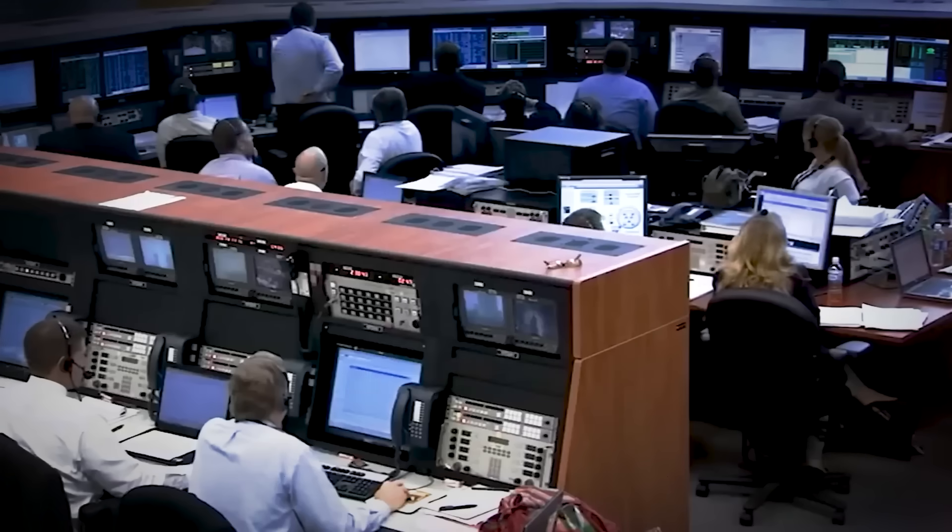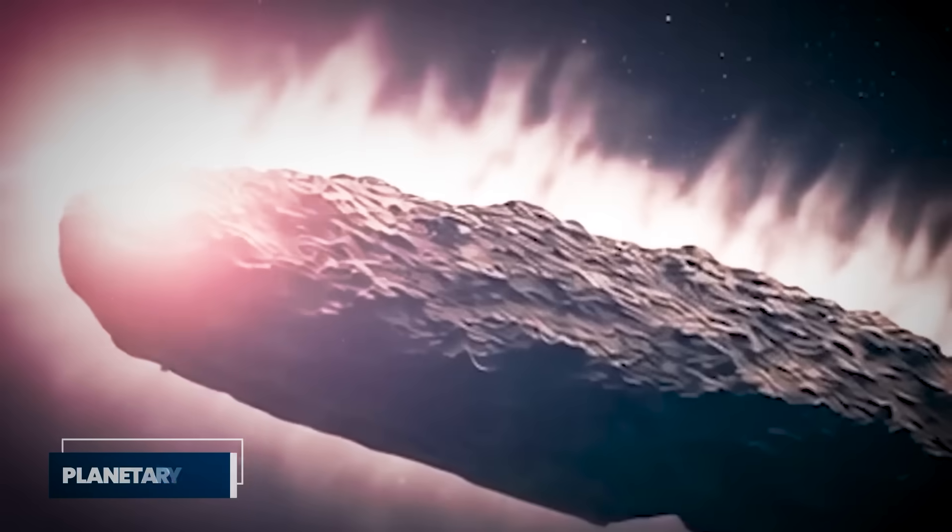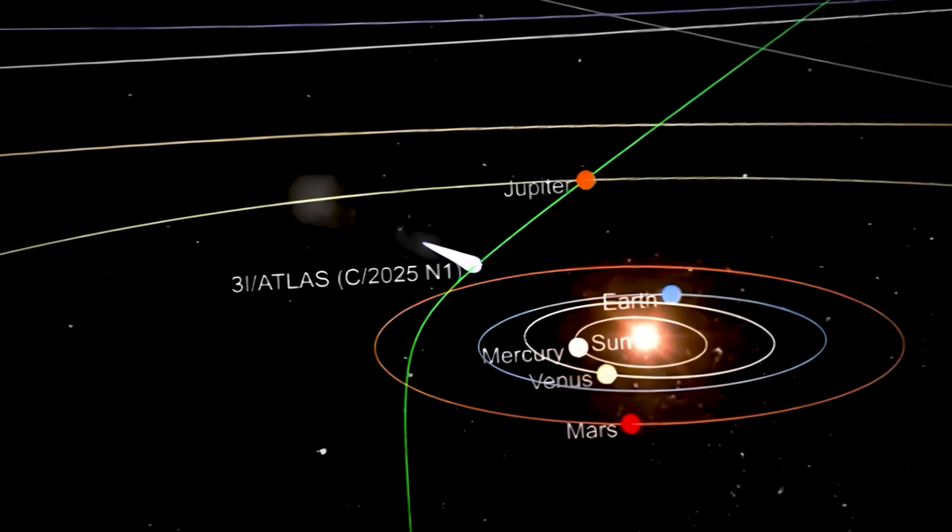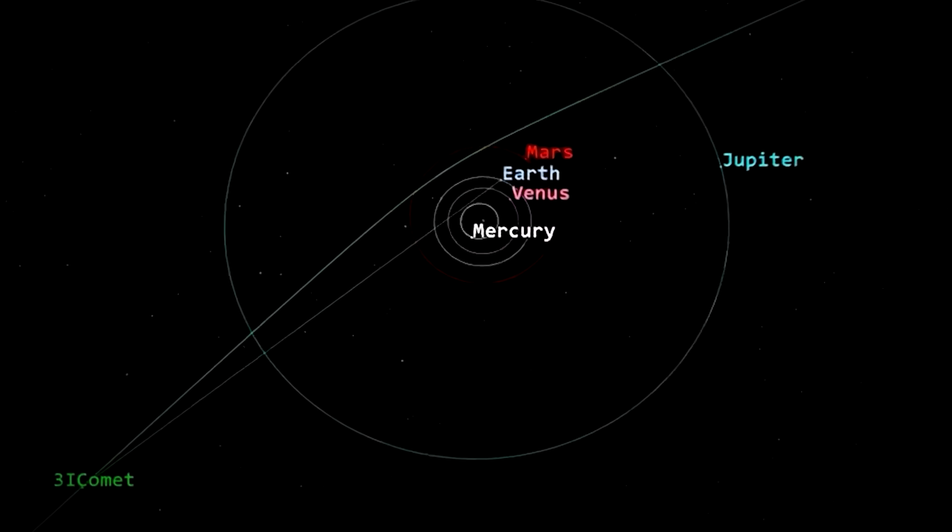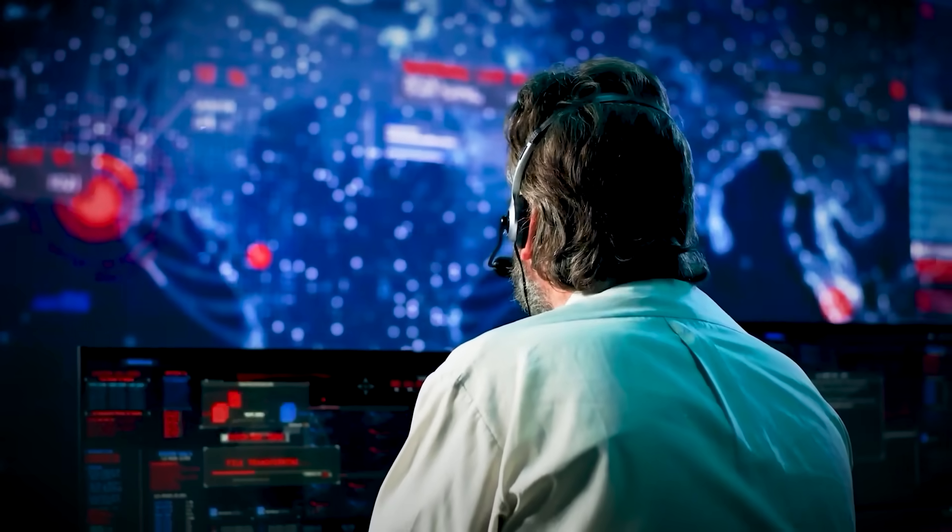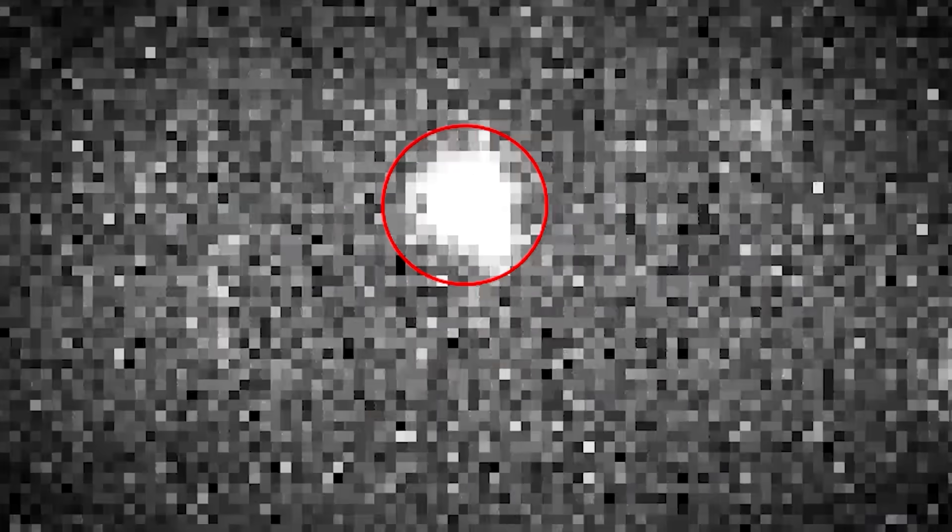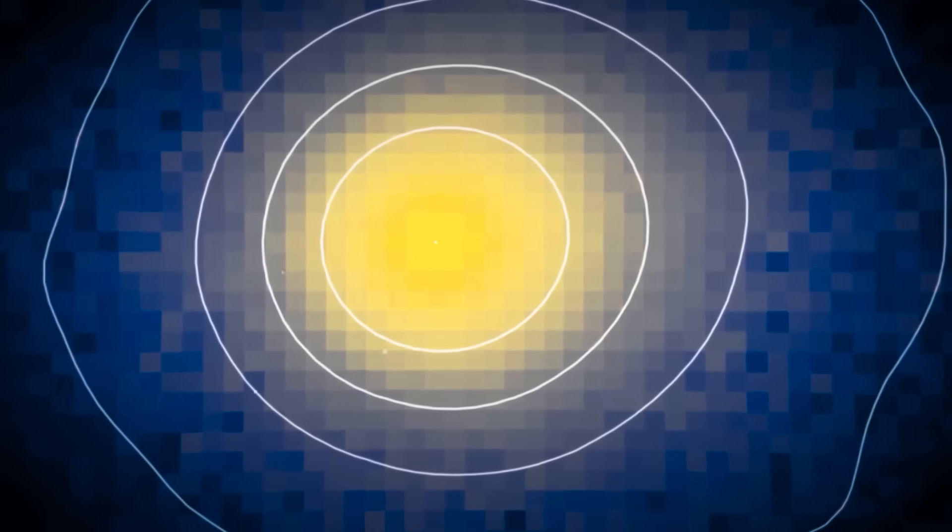Some scientists are exploring the idea that 3I Atlas might be what's called a planetary seed, an object designed to catalyze planet formation in young solar systems. Astrophysicist Suzanne Falsner has shown through computer simulations that large interstellar objects can dramatically speed up the planet-building process by serving as ready-made cores for gas giants. If this theory is correct, 3I Atlas might not be studying our solar system. It might be trying to change it.